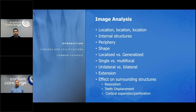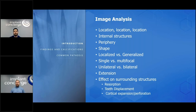Internal structure — that's your high density, low density, radiopaque, radiolucent, or mixed density. The periphery is going to be corticated or non-corticated, irregular borders, shape — is it round or irregular, does it have a chevron shape. Bilateral versus unilateral. Extension is very important. The key one is: what's the effect on surrounding structures? Is there root resorption, tooth displacement? Teeth being displaced with something between them suggests a benign neoplasm. Cortical expansion suggests neoplasm. Interruption of cortical outlines — all of that description leads you toward your finding.